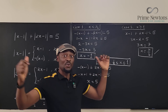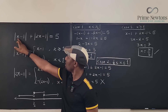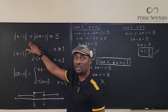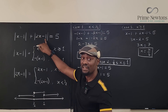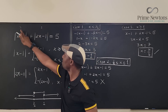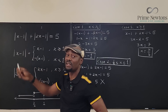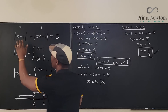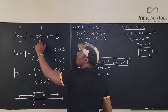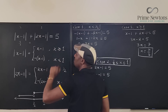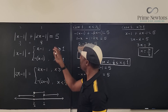Let's verify. For x = −1: |−1 − 1| = |−2| = 2, and |2(−1) − 1| = |−3| = 3. Since 2 + 3 = 5, that's correct. For x = 7/3: |7/3 − 1| = |4/3| = 4/3, and |2(7/3) − 1| = |14/3 − 3/3| = 11/3. Since 4/3 + 11/3 = 15/3 = 5, that's also correct.